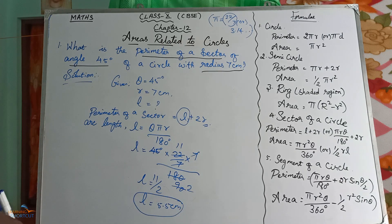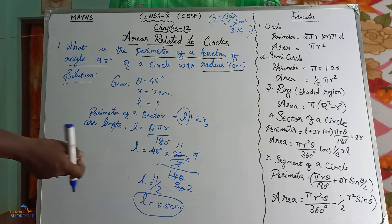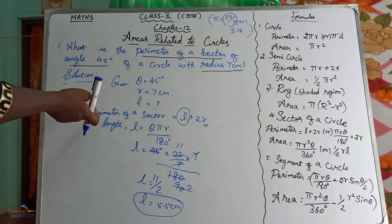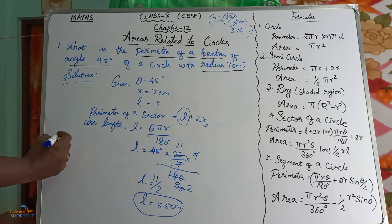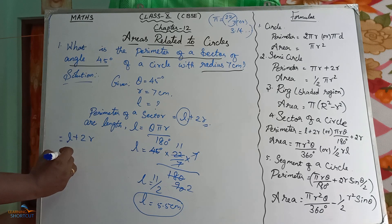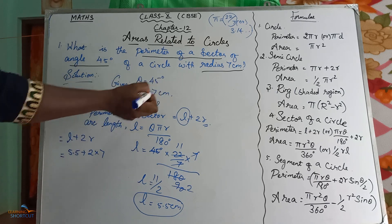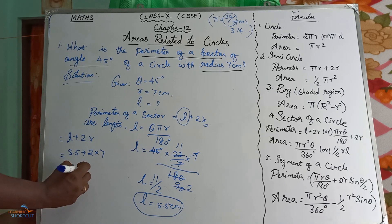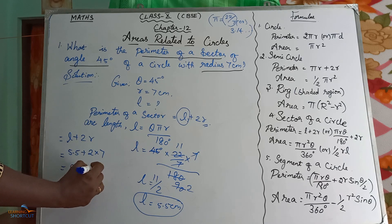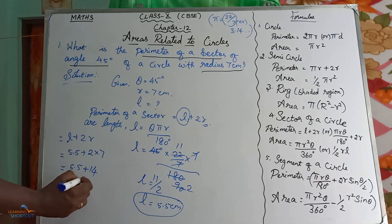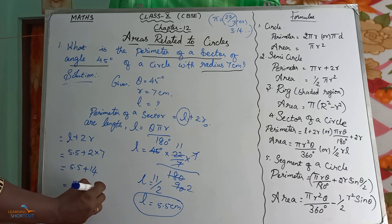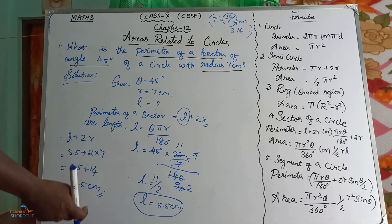Now we have got the value of L. Substitute the value of L in the perimeter of a sector. Perimeter of the sector equals L plus 2R, so 5.5 plus 2 times 7, which is 5.5 plus 14, giving the answer 19.5 cm. This is the answer for the first question.